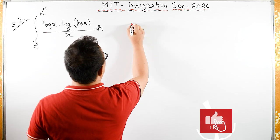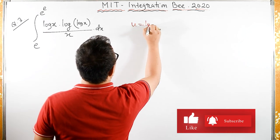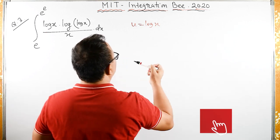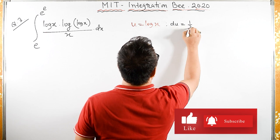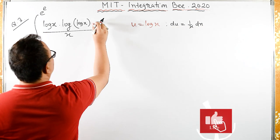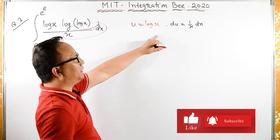Let's substitute u equals log of x. Then du equals 1 by x dx. Therefore, dx upon x becomes du.